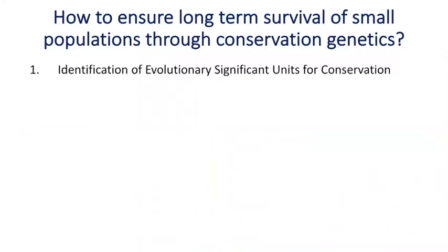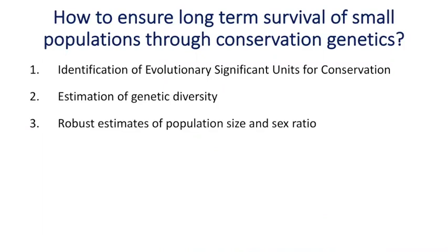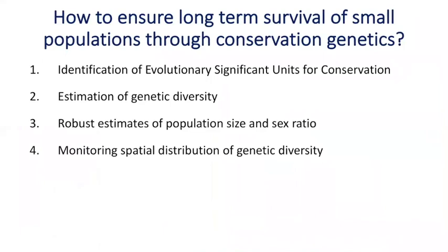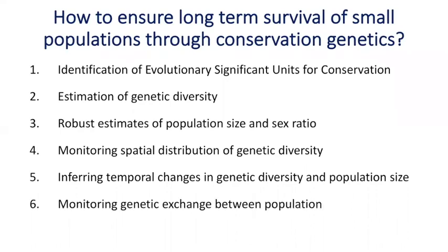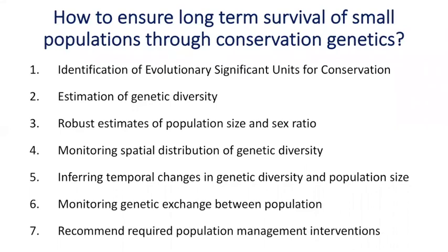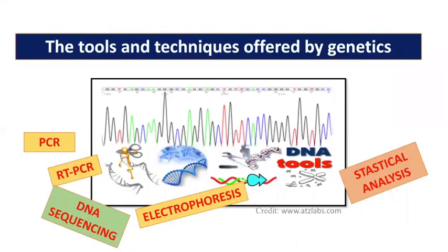To ensure survival of small populations, we can use genetics for identification of evolutionary significant units, proper estimation of genetic diversity, robust estimates of population size and sex ratio, and understanding how diversity is distributed across space and has changed across generations. The power of genetics is that even without historical sampling we can infer how populations have changed in terms of genetic diversity and population size. Various tools and techniques are available, including DNA sequencing and PCR — terms many have heard in the context of COVID-19 RT-PCR testing.